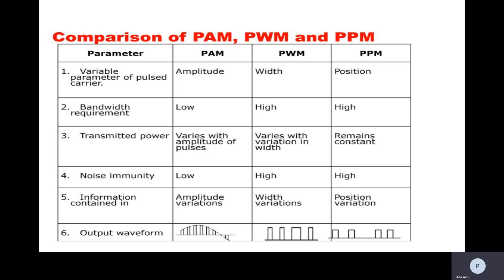Now we will see the comparison between PAM, PWM, and PPM. In all three modulations, we are changing the characteristics of a pulsed carrier signal in accordance with the message signal, but the difference is: in PAM the amplitude changes, in PWM the width changes with remaining parameters constant, and in PPM the position changes with remaining parameters constant. The first comparison parameter is the variable parameter of the pulse carrier: in PAM we vary amplitude, in PWM we vary width, and in PPM we vary position.